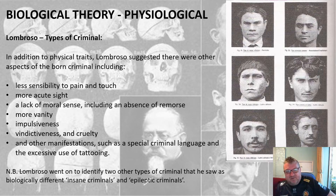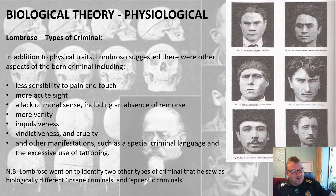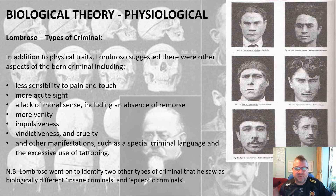Lombroso also went on to identify two other types of criminals he saw as biologically different: insane criminals and epileptic criminals. However, the main focus of this section of the course is his atavistic features.